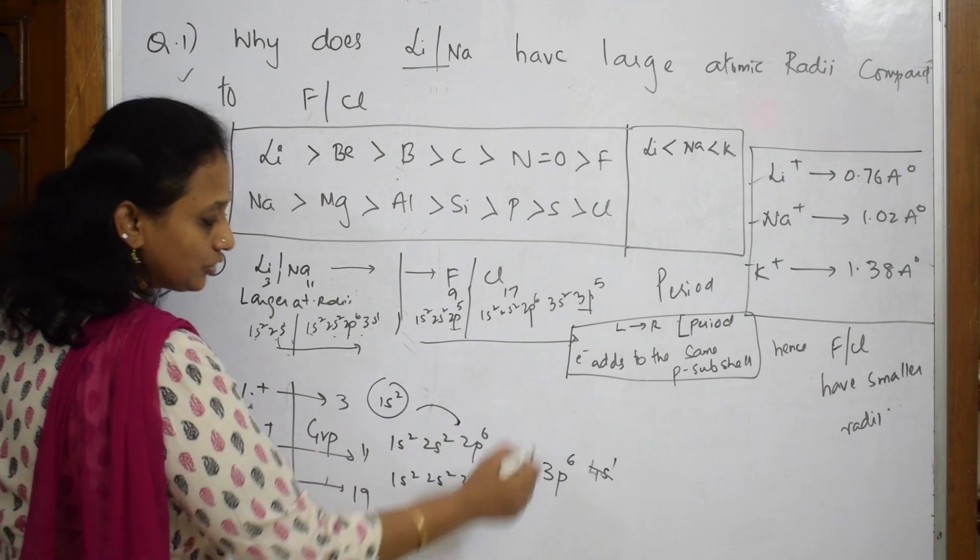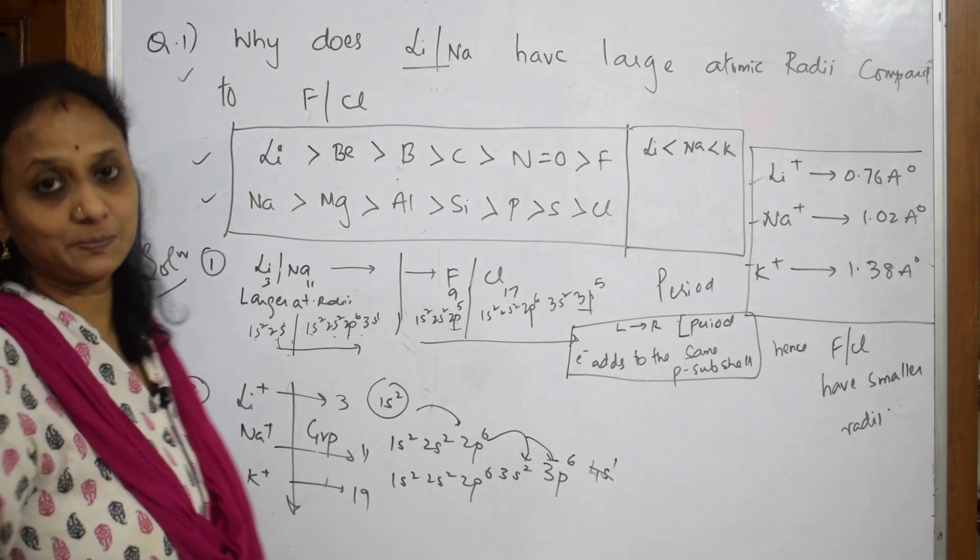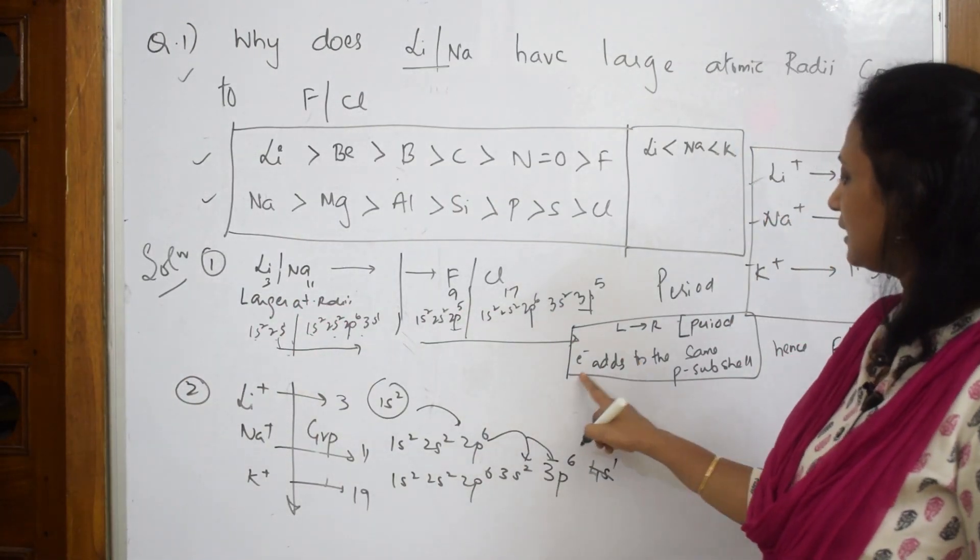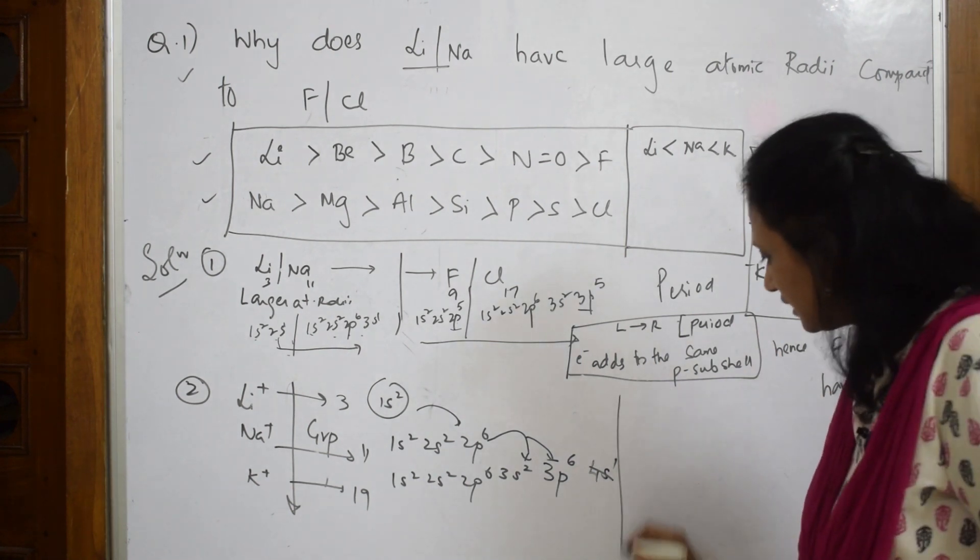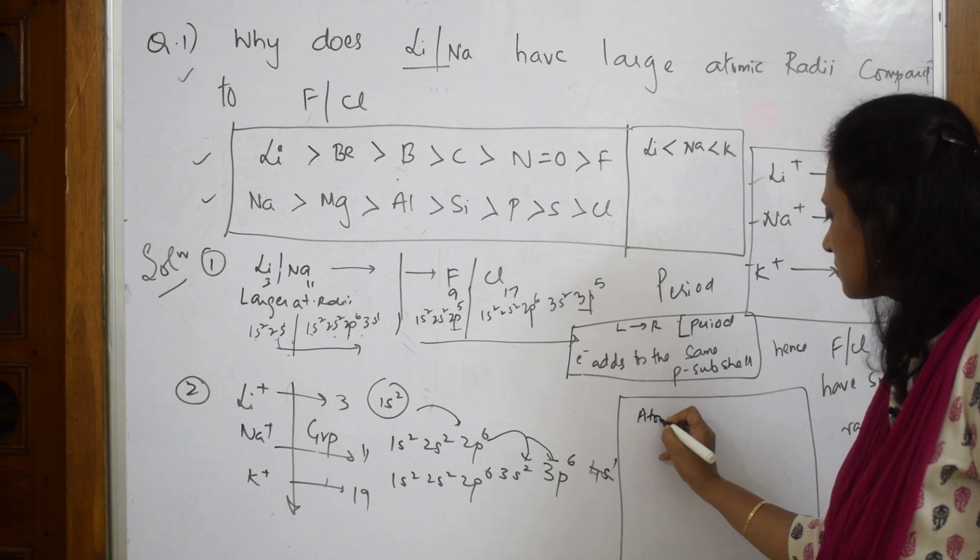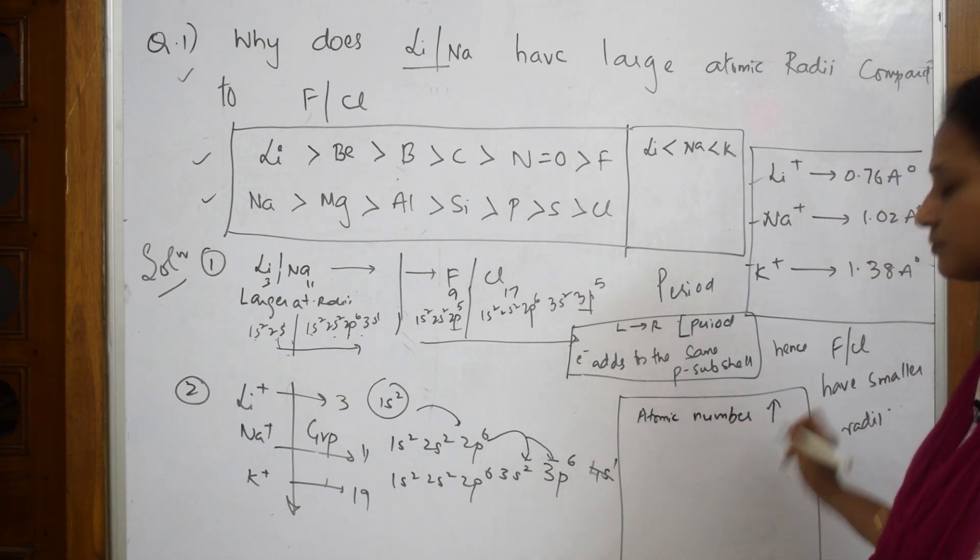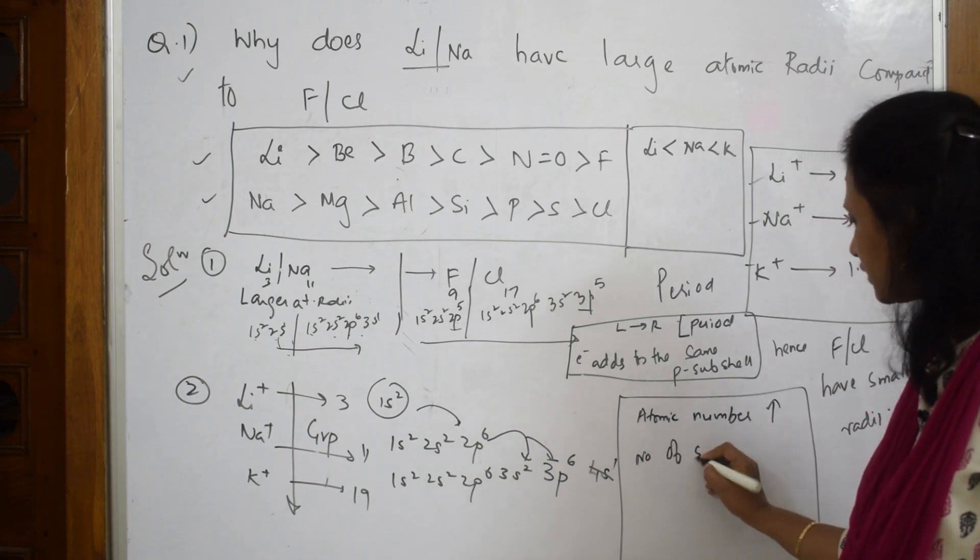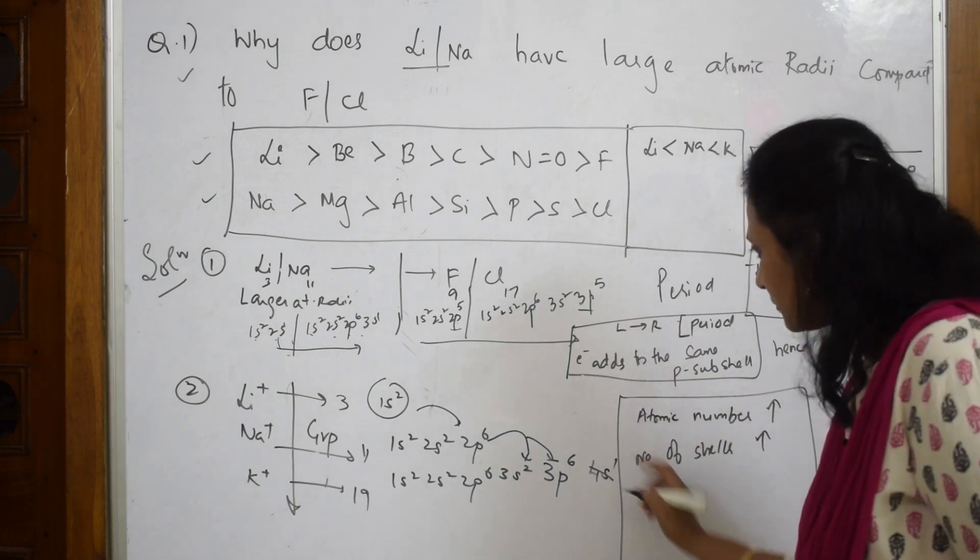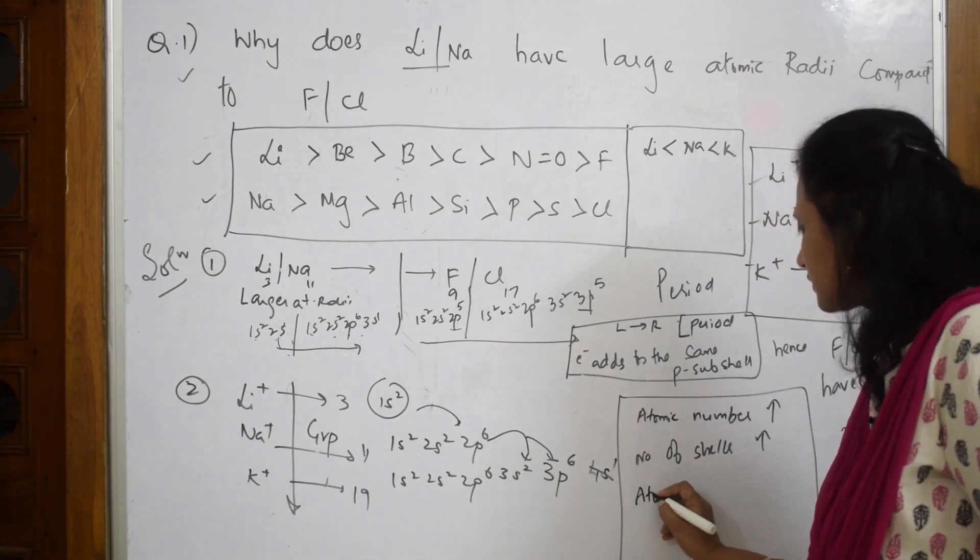Now what are you observing? This is 1s, when you go down the group 2p is getting added, when you go down further 3s and 3p also get added. It's expanding in number of orbits - that is your answer. So in a period, electron adds to the same subshell. Next in a group, what happens? Atomic number increases, number of shells increases. Then automatically, as atomic number increases, number of shells increases, atomic radii also increases.